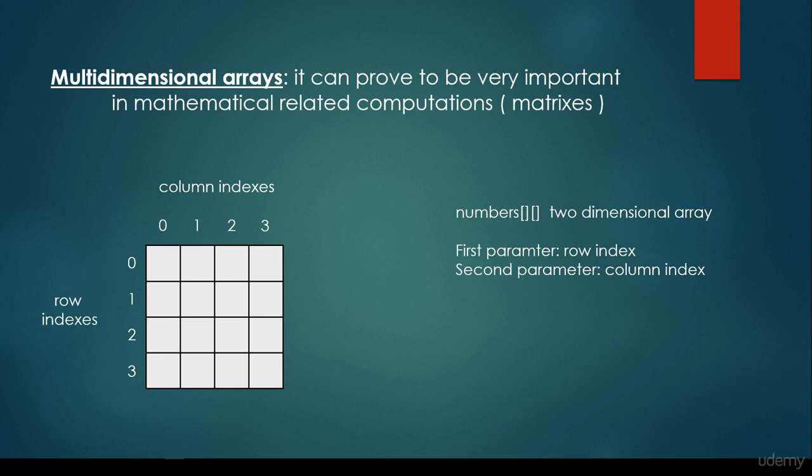So we are able to construct this number's two-dimensional array. The first parameter refers to the row index, the second parameter refers to the column index. For example, this number two-three means that it is in the number two-dimensional array, where the row index is equal to two, and the column index is equal to three. So it references this red square.